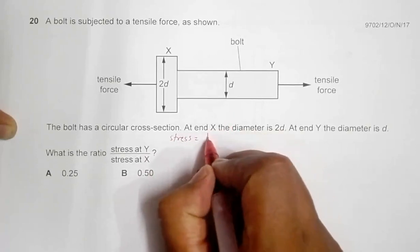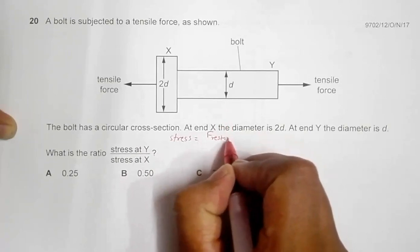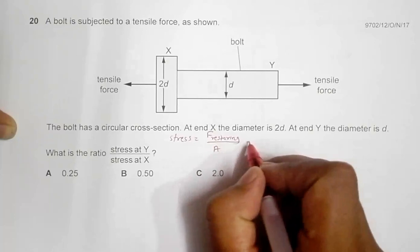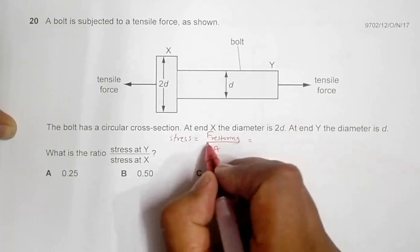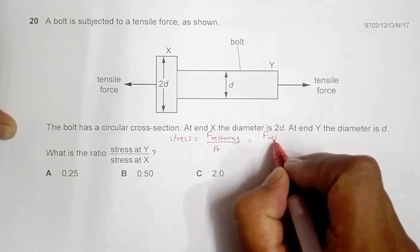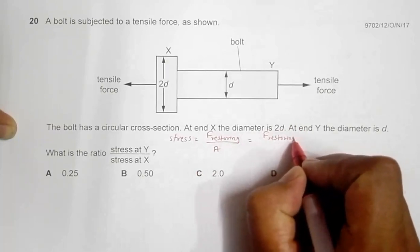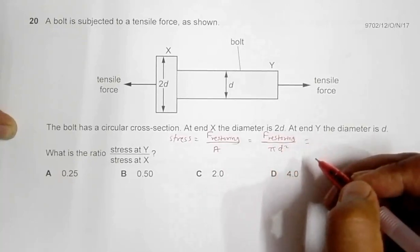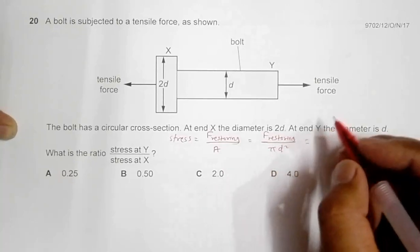Force restoring by cross-sectional area. So I can change this formula as the restoring force by A is pi D squared. And here in the case of equilibrium, this restoring force equals the tensile force, so it is tension force by pi D squared.